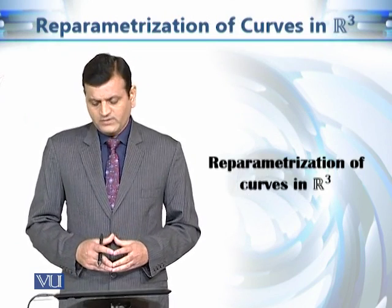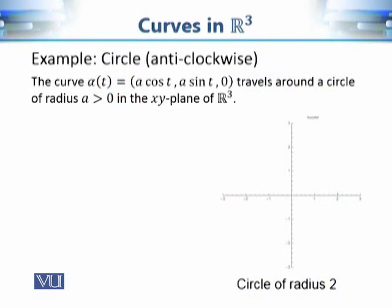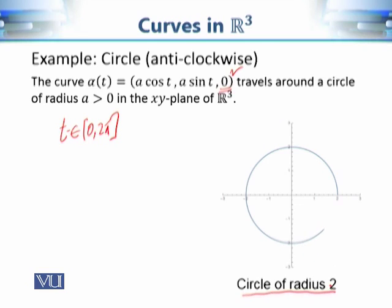We want to understand what reparameterization of curves in R³ means. Consider the example of a circle where alpha(t) = (a cos t, a sin t, 0), with t from 0 to 2π. When we sketch the points of alpha in R², we get a circle traversed in the anti-clockwise direction. In the animation we have a circle of radius 2 moving anti-clockwise. So alpha(t) represents a circle of radius a.